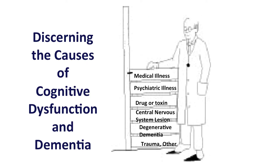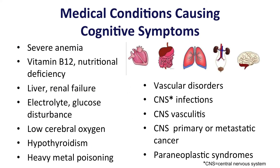The provider's task is to discern the different causes of cognitive dysfunction or dementia. There are many different possibilities, and here are some of the major categories to consider. Medical conditions causing cognitive symptoms are many. Highlights among those tested for in a routine evaluation include vitamin B12 deficiency, organ failure such as liver or kidney disease, metabolic and electrolyte abnormalities, endocrine abnormalities such as thyroid dysfunction, and vascular disorders which can be noted on imaging studies.